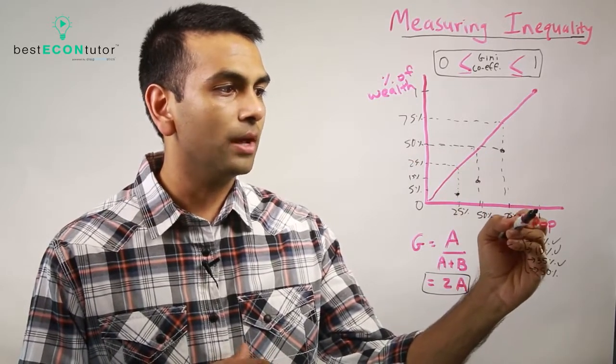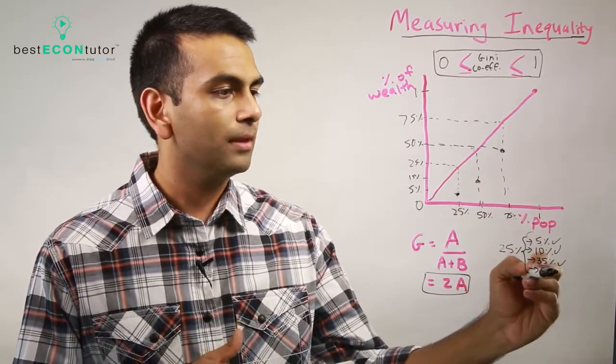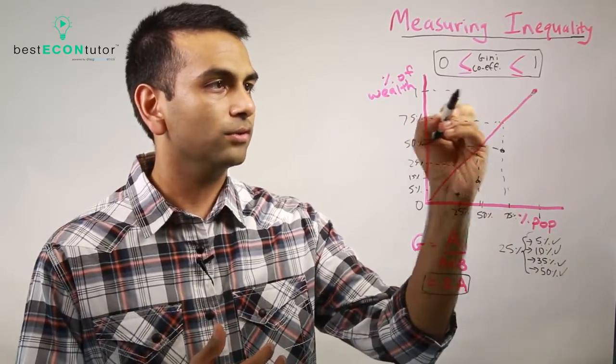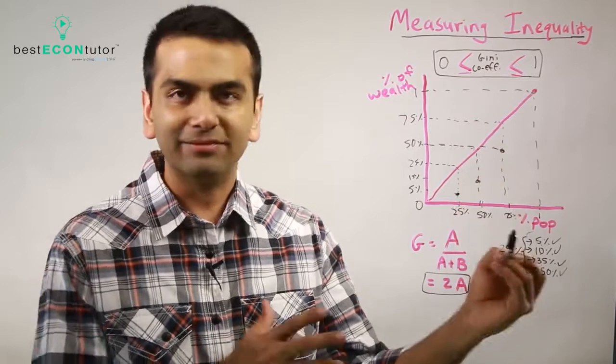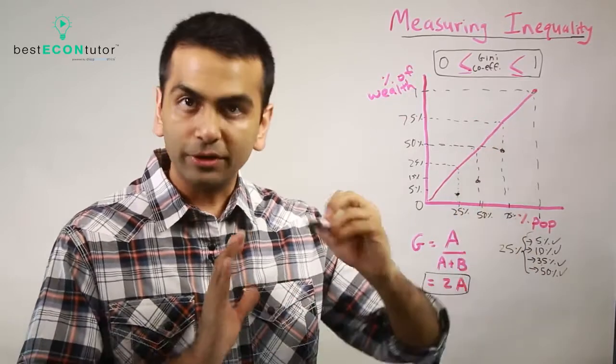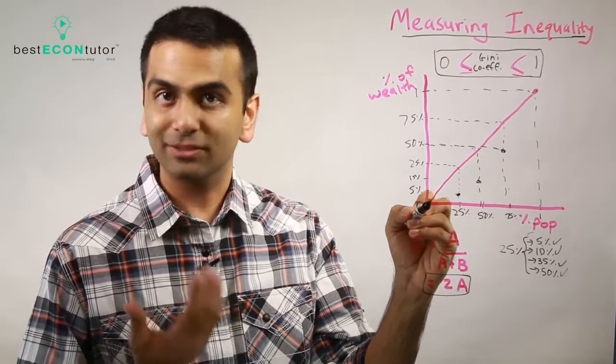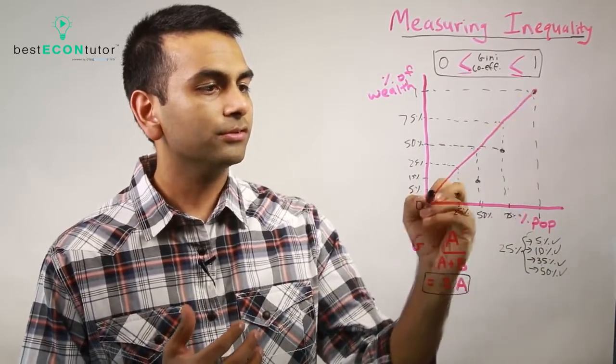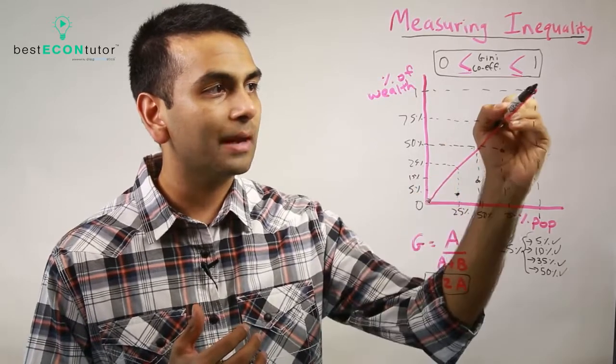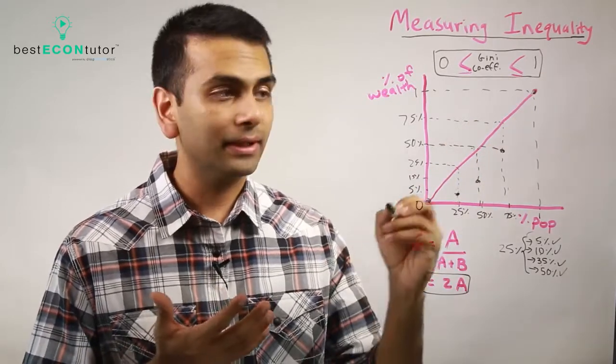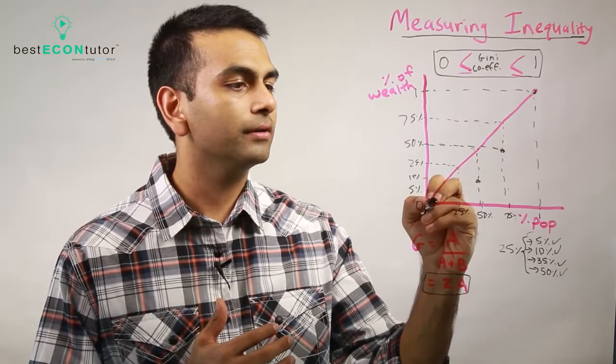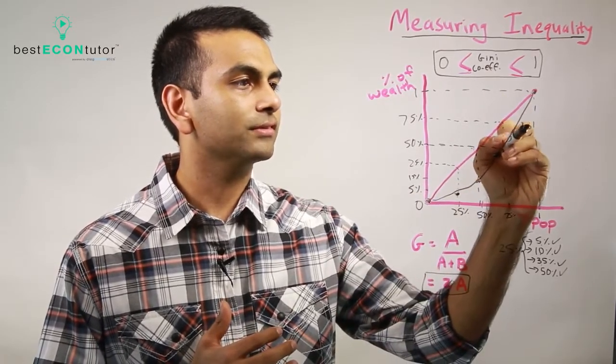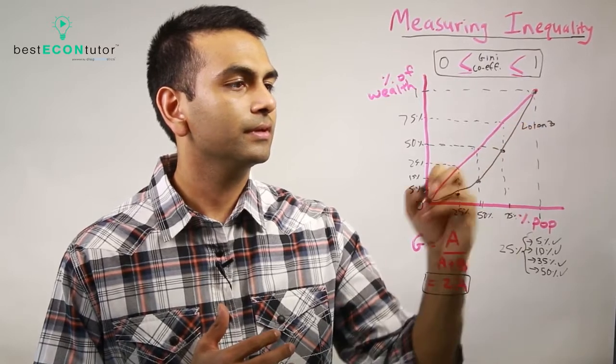Finally, when we get to 100% of people, that's adding the other 50%, which is 100% of the wealth. One hundred percent of people always have 100% of the wealth. So when you're making your Lorenz curve, 0% of people always have 0% of wealth, and 100% of people always have 100% of wealth. It always shares these two endpoints with the line of perfect equality. But as we saw, our graph ended up looking like this—this is our Lorenz curve.